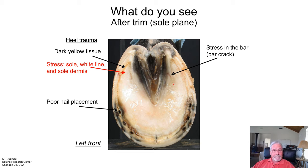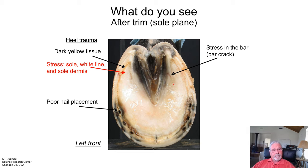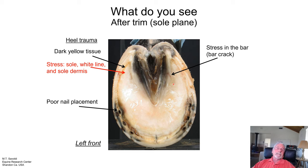A lot of people look at how a foot lands, and if they don't like how it's landing, they can trim the foot to make it land better. Horses don't have a problem with their feet landing — the brain will tell them if it's doing just fine. But if it's not landing very well, then I would investigate closer because it may be a problem.